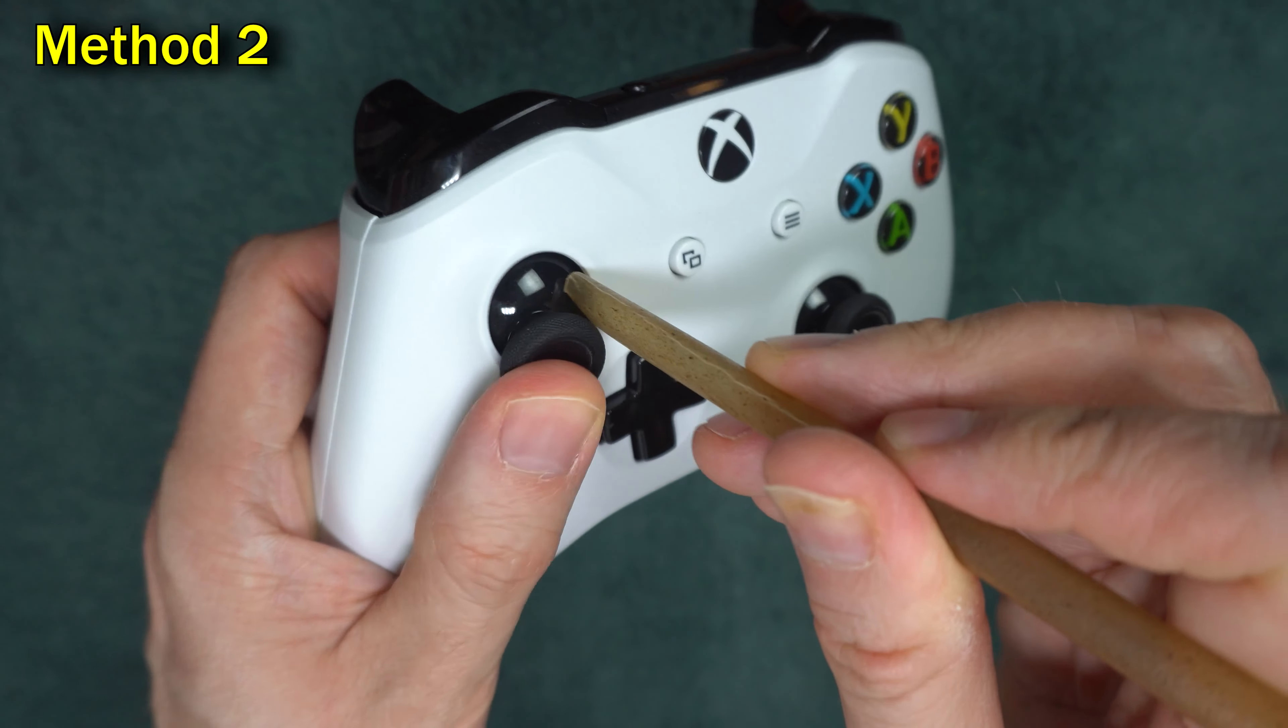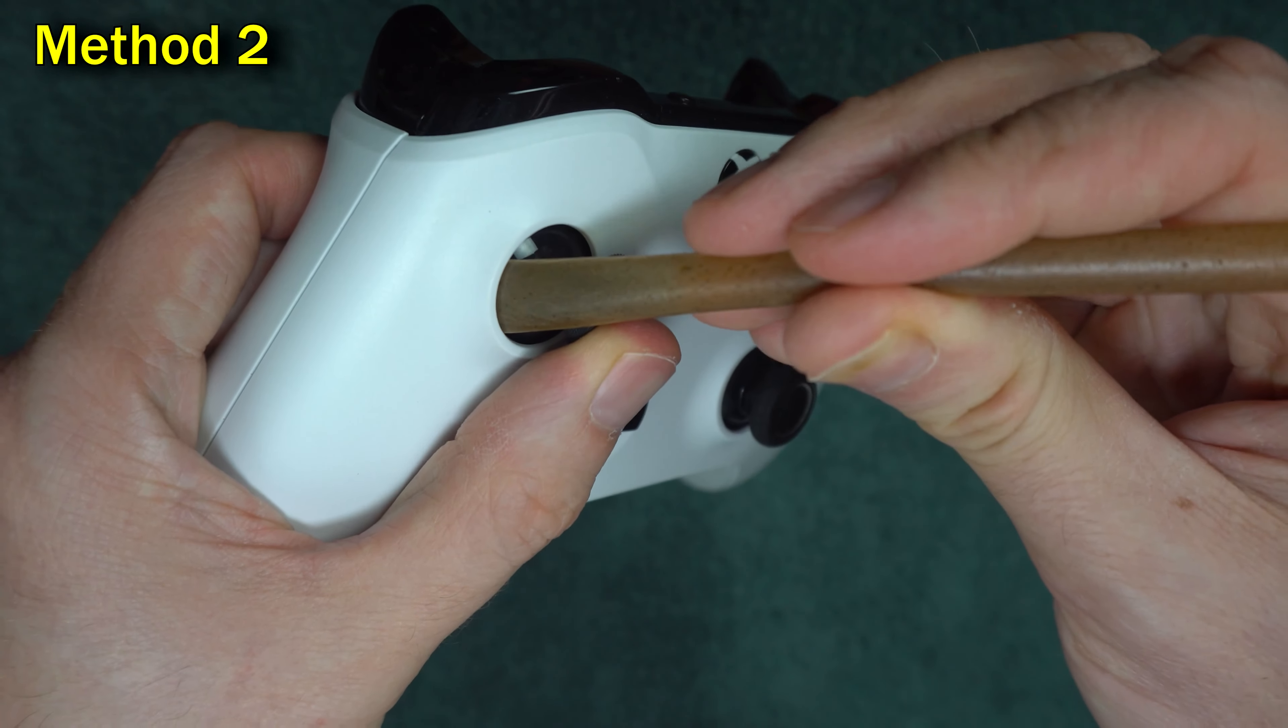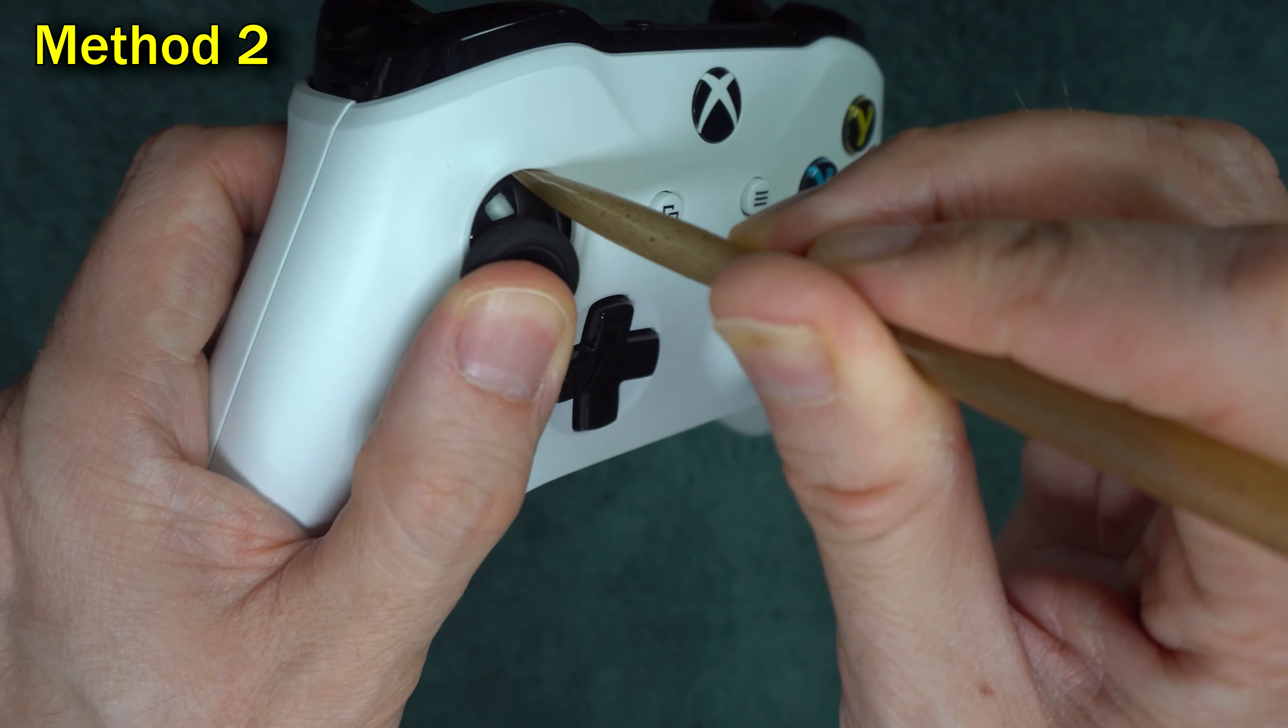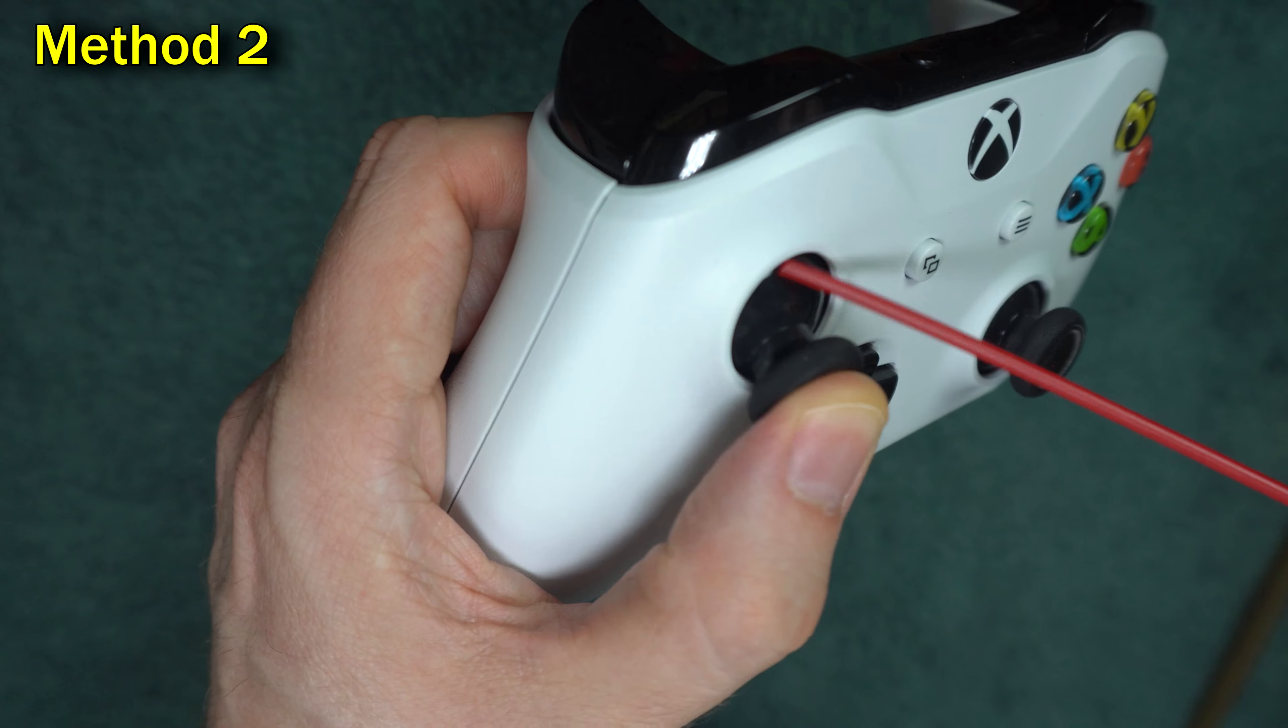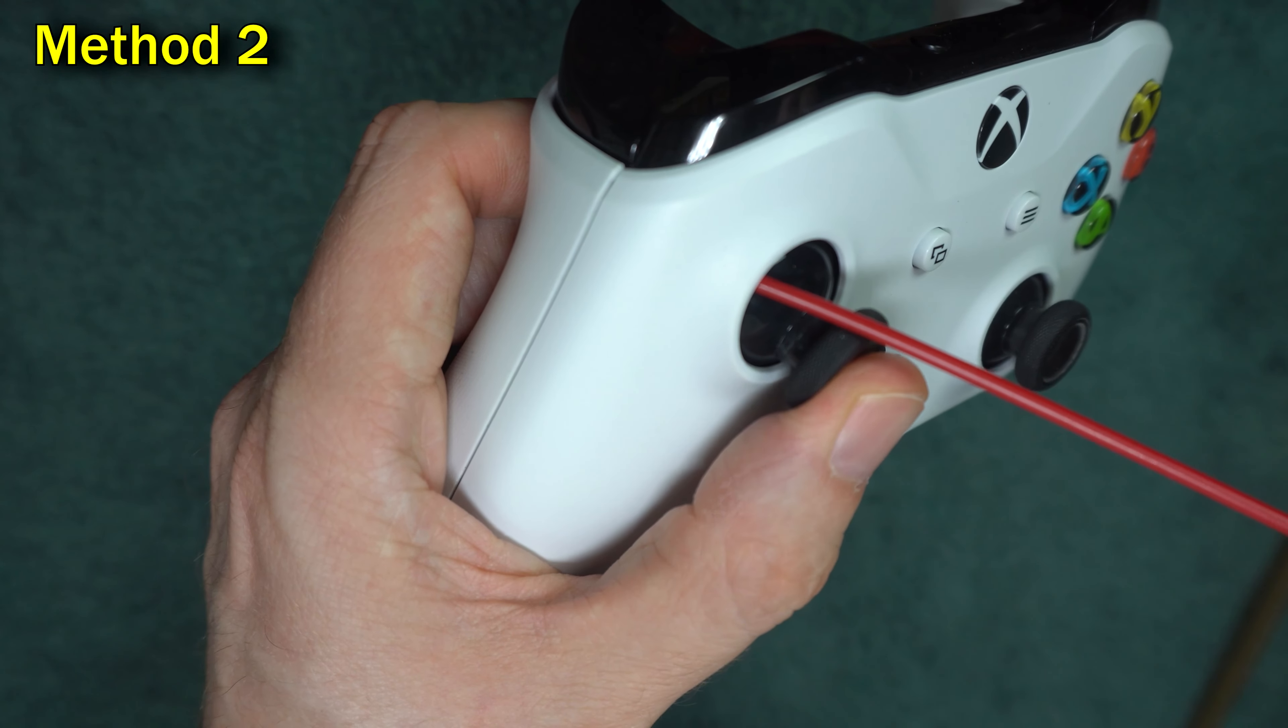Method two is to blow around the stick. The best way to do this is to take a straw and flatten it a little bit. As you blow into the side of the shaft, push the stick in the opposite direction. You can also use canned air, or some people just put their mouth on it and blow. The idea is to blow debris out of the mechanism.